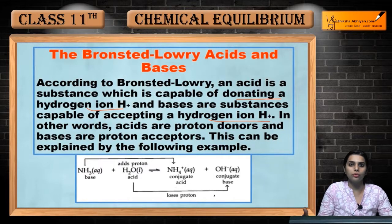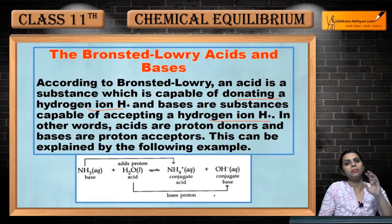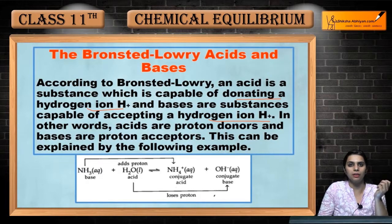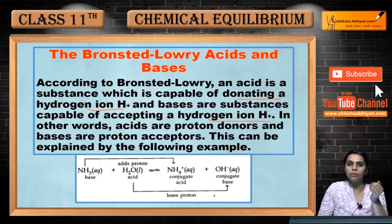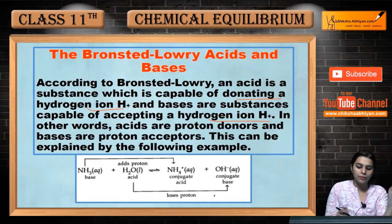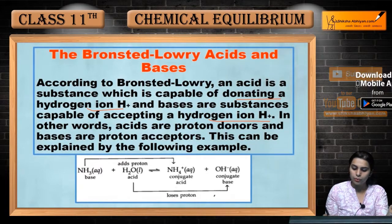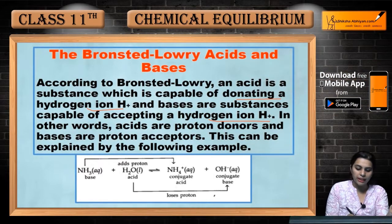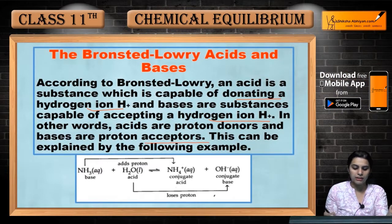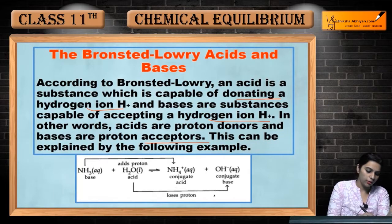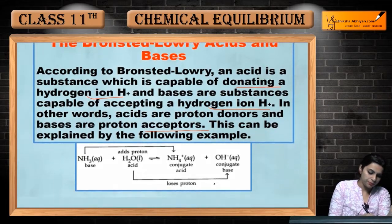What Bronsted-Lowry theory says is that an acid is always a proton donor — the proton donor being H-positive ion. In other words, acids are proton donors and bases are proton acceptors. This can be explained by the following example.